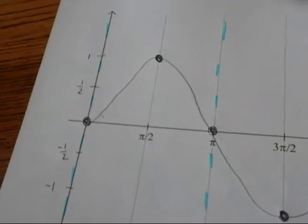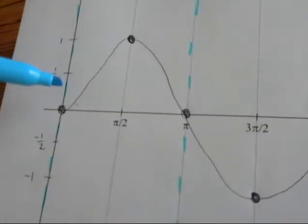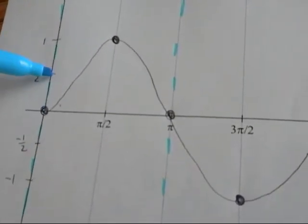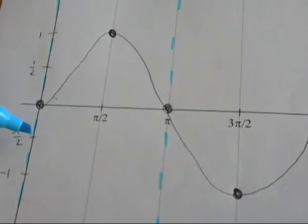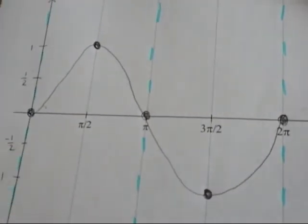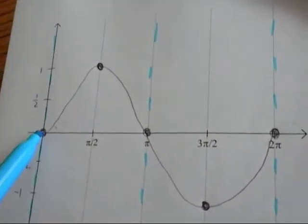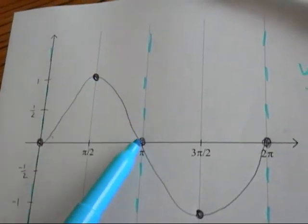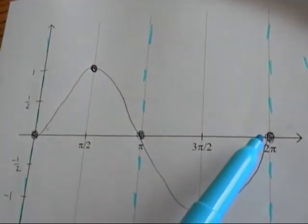But remember, I'm also changing my height. I'm only going to go up half as far and down half as far. So the zeros are still very consistent. Remember we have one, two, three, four, five key points.